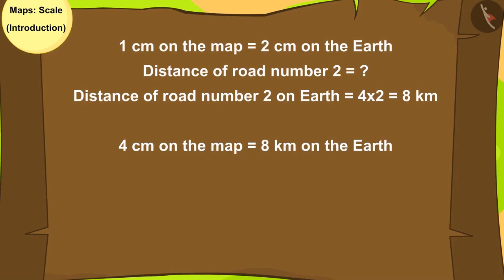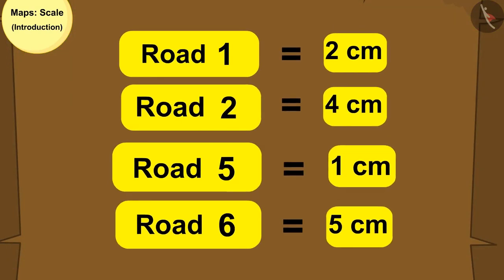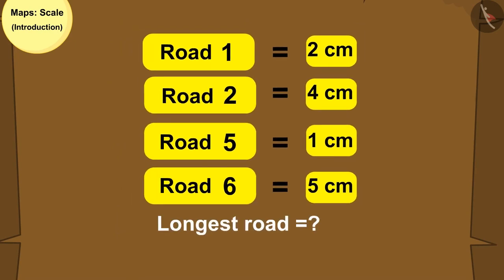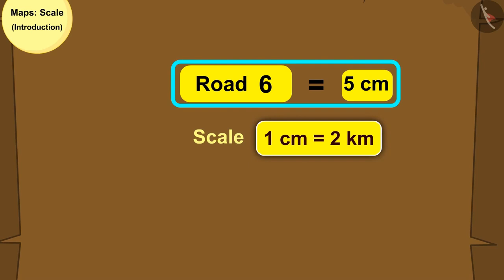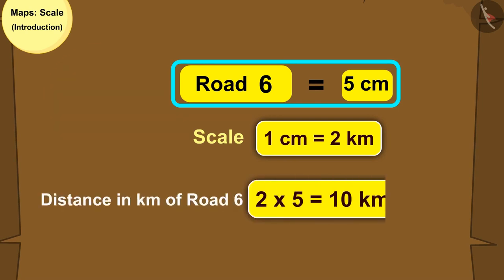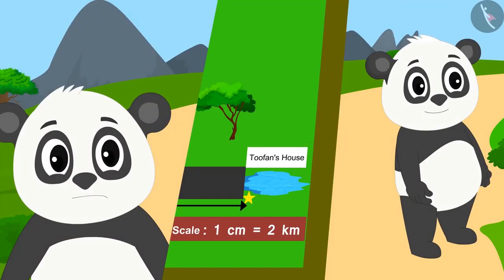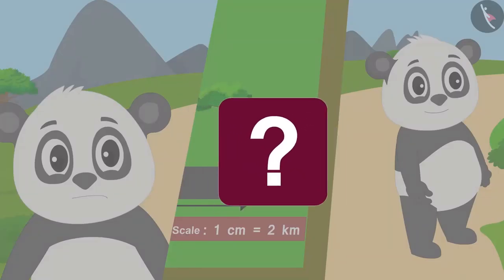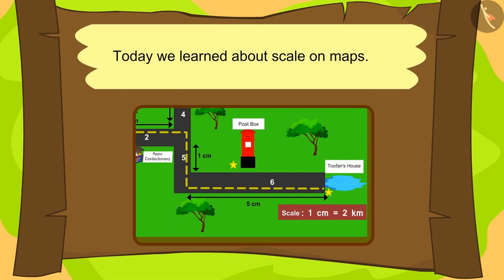Kids, your answer is absolutely correct. The distance of road number 2 is 8 km. Here the distances of all the roads on Golu's way are shown in centimetres. Now can you identify the longest road? Use the scale to tell the distance in kilometres of the longest road — you can pause the video to find the answer. Yes, your answer is absolutely correct. Road number 6 is the longest road and its distance is 10 km. Children, in this lesson we learned about the scale on the maps.